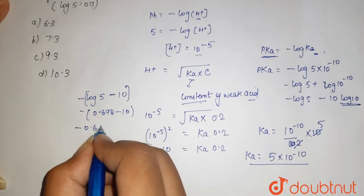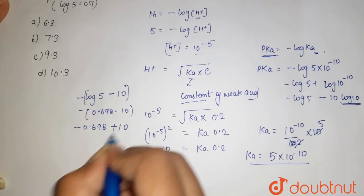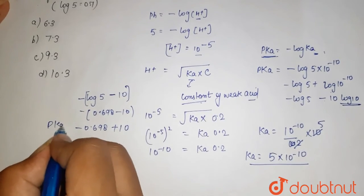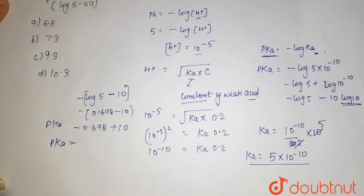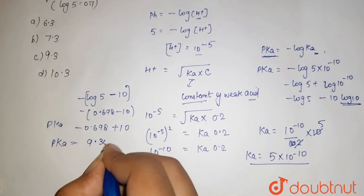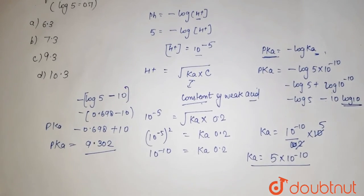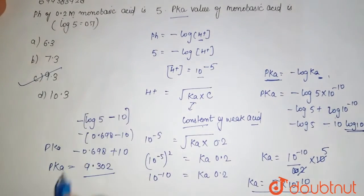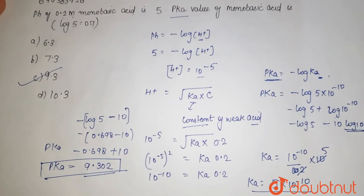Now your pKa it comes out to be - so it comes out to be 9.302. So this is your answer. So according to that, your c option will be the right - that your pKa equals to 9.302.